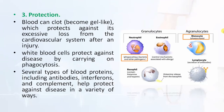Protection: Blood can clot, which protects against excessive loss from the cardiovascular system after an injury. White blood cells protect against disease by carrying on phagocytosis — neutrophils and monocytes are involved in this process. Several types of blood proteins including antibodies, interferons, and complement help protect against disease in a variety of ways.